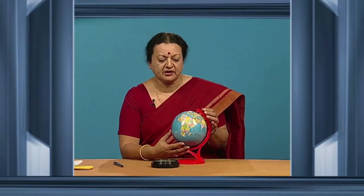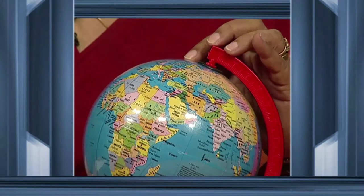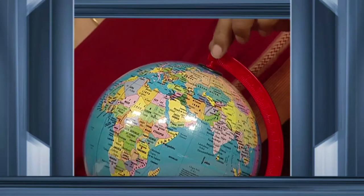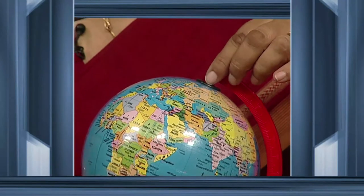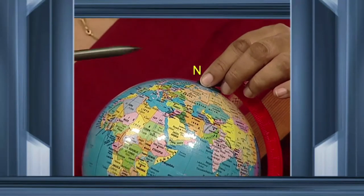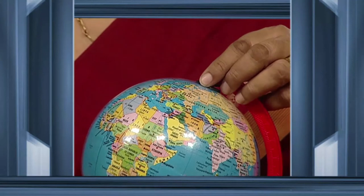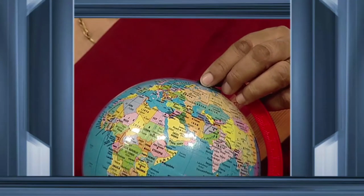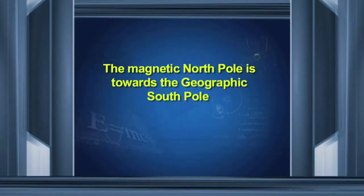Where are the poles associated with this dipole? Some of the known facts about the Earth's magnetic field are that the south pole of the dipole imagined inside the Earth is somewhere in the northern section — somewhere over here. And the associated north pole of our magnetic dipole is towards the south.